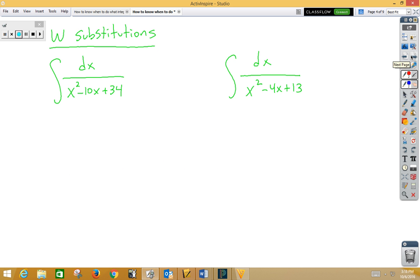Sometimes you need to do two u substitutions, which we would call a w substitution. This one, notice the bottom, we could complete the square on, and then we could do two u substitutions.